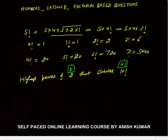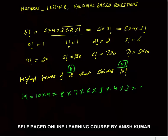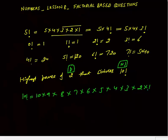10 factorial is 10 into 9 into 8 into 7 into 6 into 5 into 4 into 3 into 2 into 1. Highest power of 2 means how many 2's are there in 10 factorial. First, I will count the multiples of 2 directly.